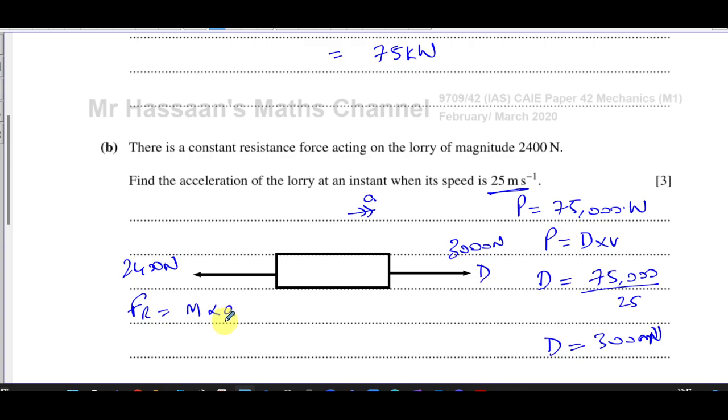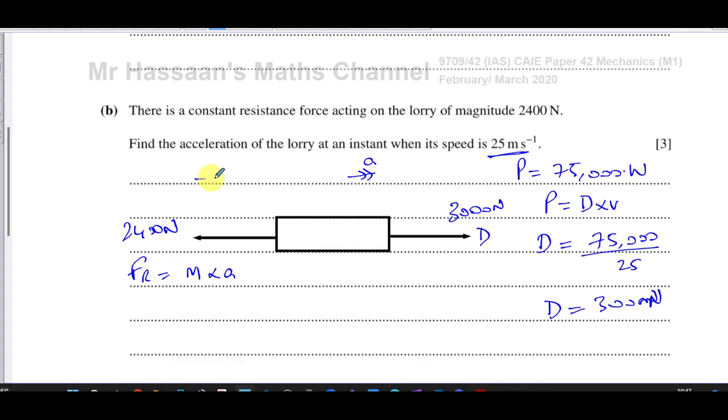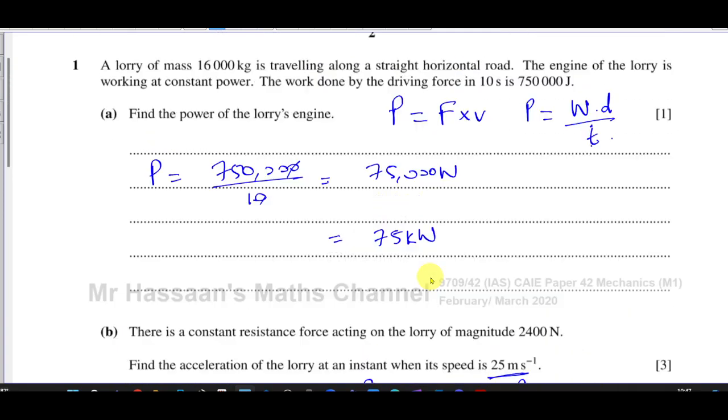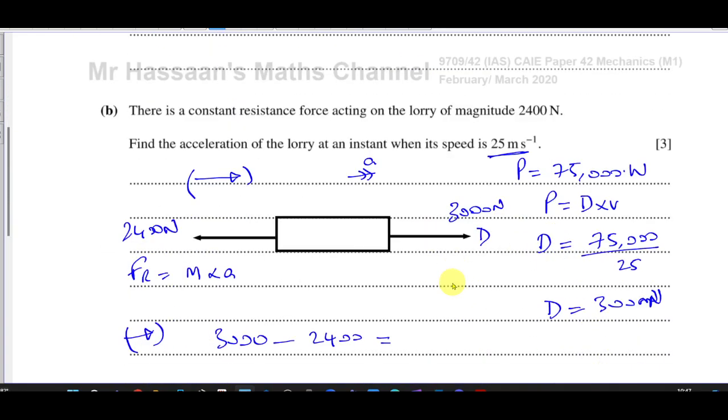So now we can say that the resultant force, the resultant force is equal to the mass times the acceleration. And what we have to find is the acceleration. So the resultant force is basically, if we take this as positive, you say the resultant force is going to be 3000, which is the driving force minus the resistance force, which is 2400. And that's equal to the mass. Now what's the mass of the lorry? 16,000 times the acceleration. That's the resultant force equals the mass times the acceleration.